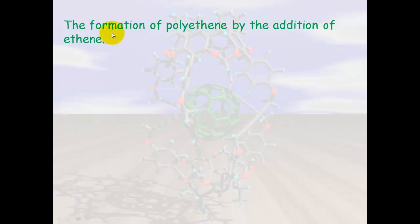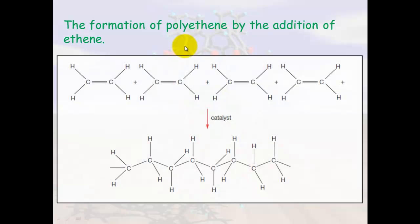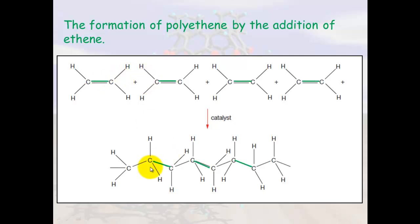Another example is the formation of polyethene by the addition of ethene to ethene. What happens is these molecules join up — the bonds flip out and join to one another — to form one giant molecule. This giant molecule is called a polymer, which is why it's called polyethene.